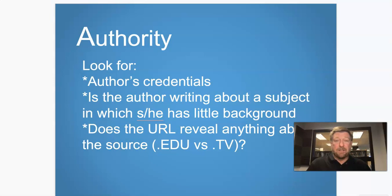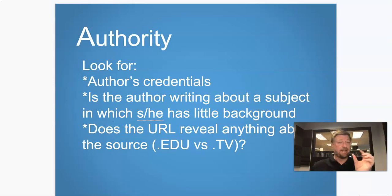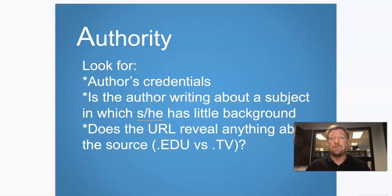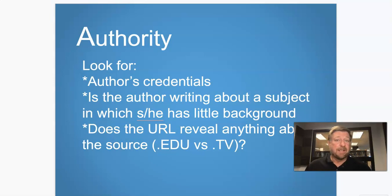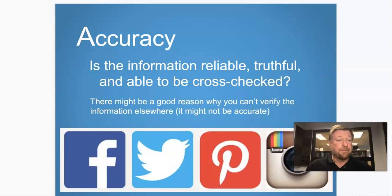Things to look for in Authority: look for the author's credentials. Is the author writing about a subject they have a background in? Or are they a journalist trained to talk to people who hopefully know what they're talking about? And back to the domain — does the URL reveal anything? Is it a .edu? Cambridge.edu versus something .tv could be telling as to whether they are worth trusting your academic reputation to.